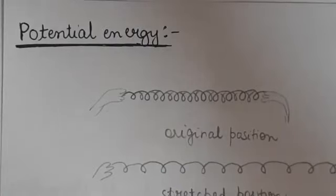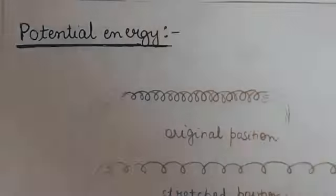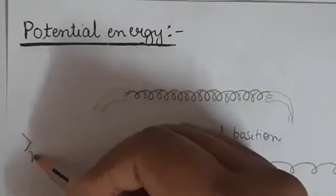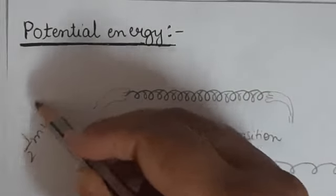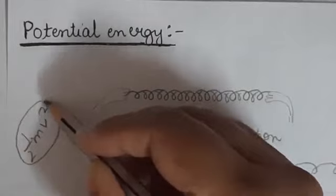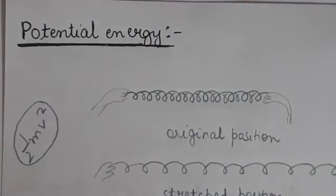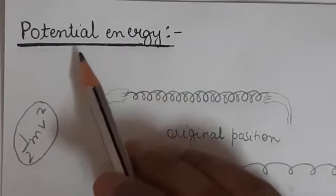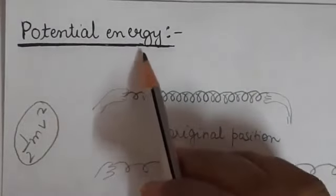What do you understand by the term potential energy? In the last lecture we discussed kinetic energy. The formula of kinetic energy was half mv squared. That was the formula for calculating kinetic energy. Now, in this lecture we shall discuss about potential energy.